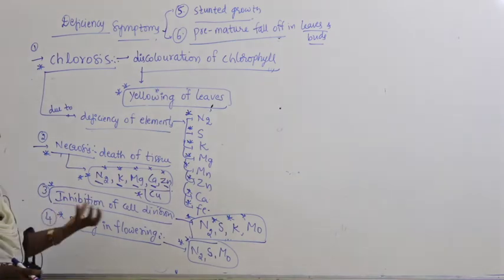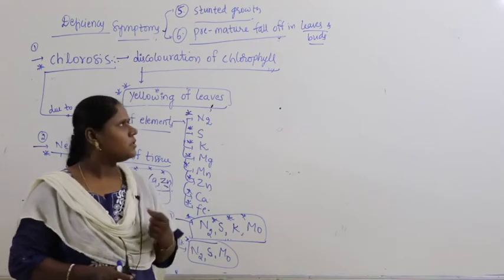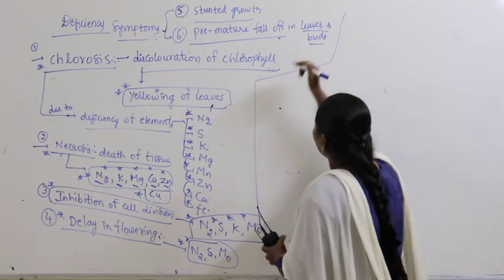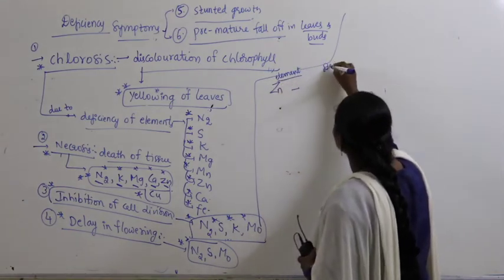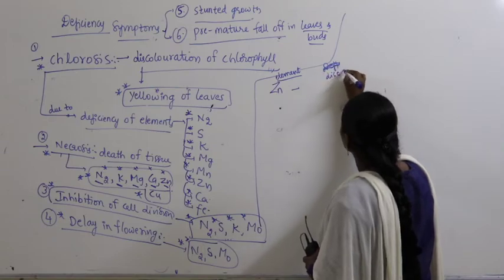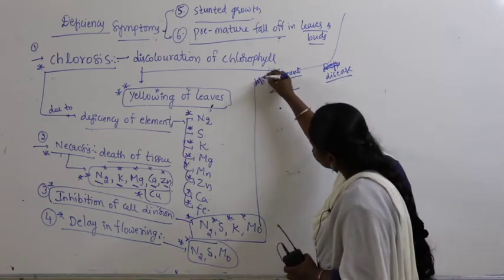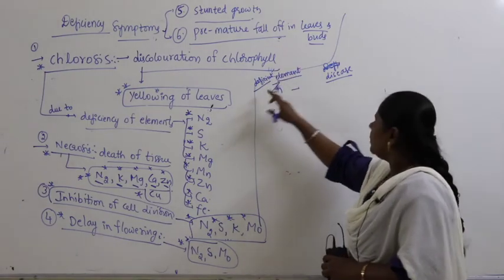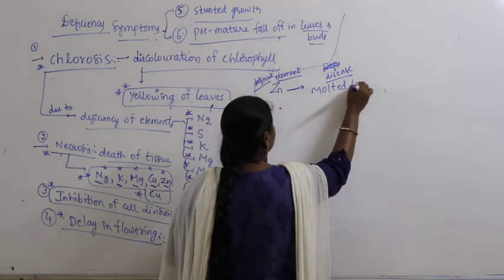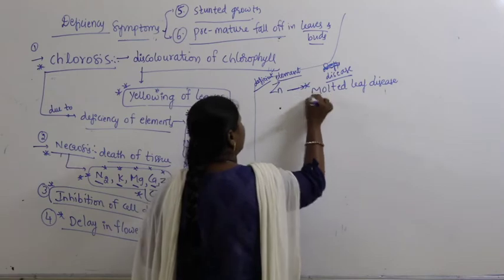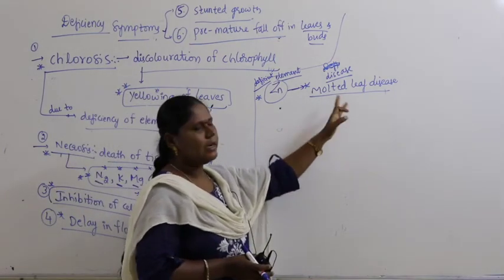Sometimes deficiency of certain elements leads to specific diseases. Let us look at a table of deficient elements and the diseases they cause. Deficiency of zinc leads to mottled leaf disease — a very important example to remember.